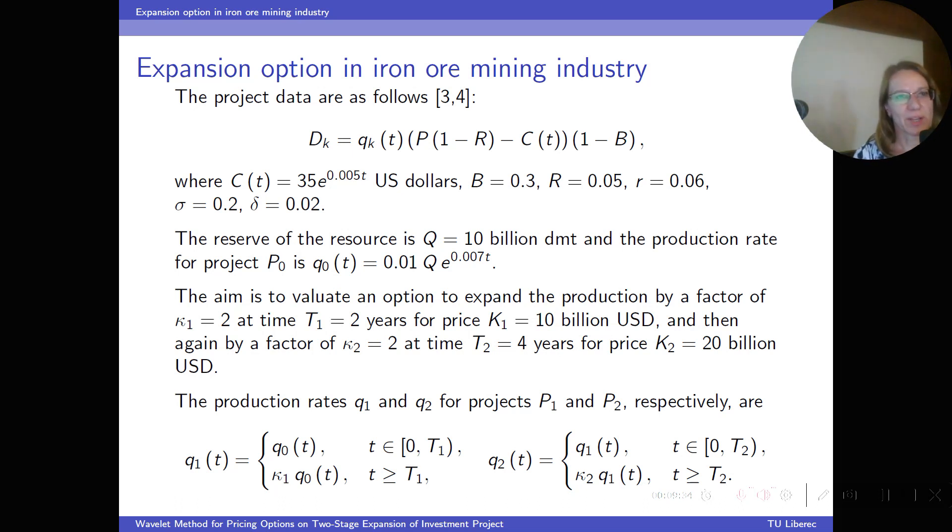Numerical experiments were conducted for expansion options in iron ore mining industry to verify the efficiency of the method. The data are taken from the literature. Here, D_k is the after-tax cash flow rate, the reserve of the resource is 10 billion tonnes, and the production rate for the first project is Q0. The aim is to evaluate an option to expand production by a factor of 2 after 2 years for a price of 10 billion dollars, and then again by a factor of 2 after 4 years for a price of 20 billion dollars.